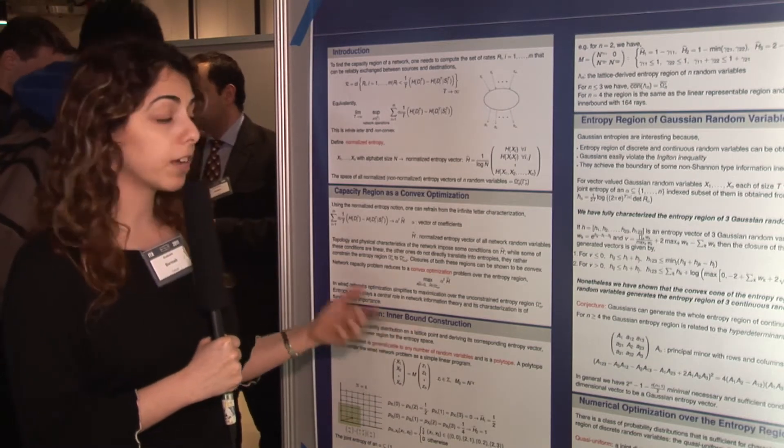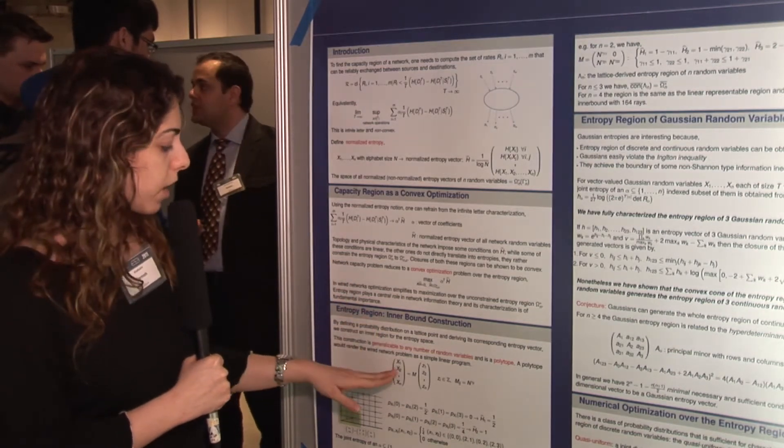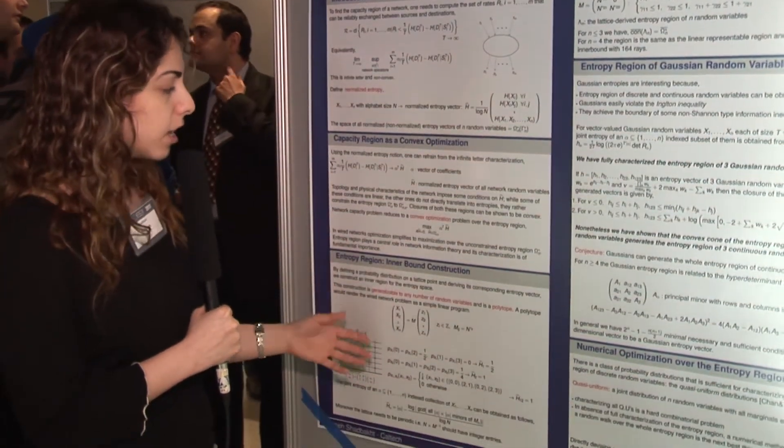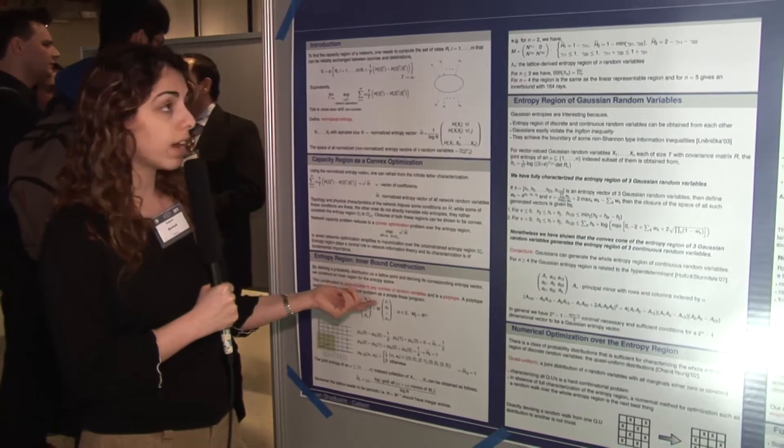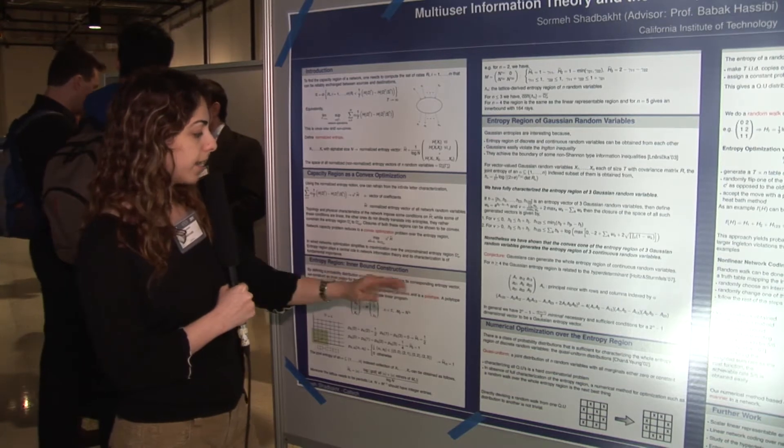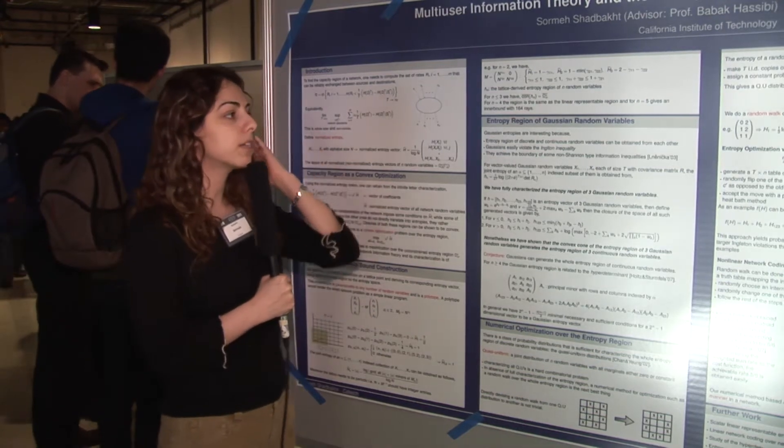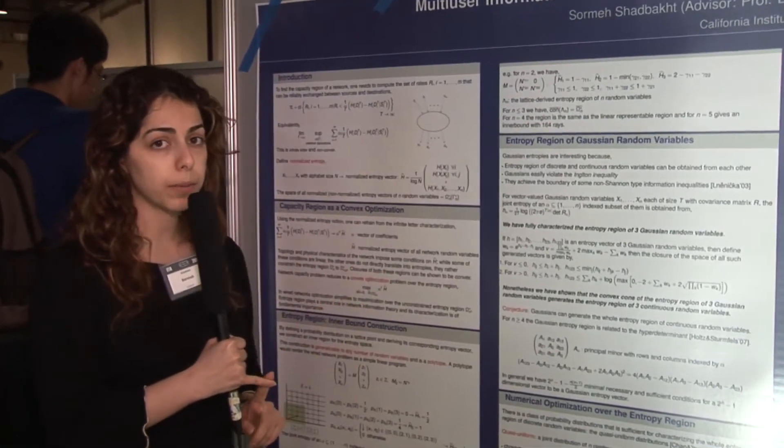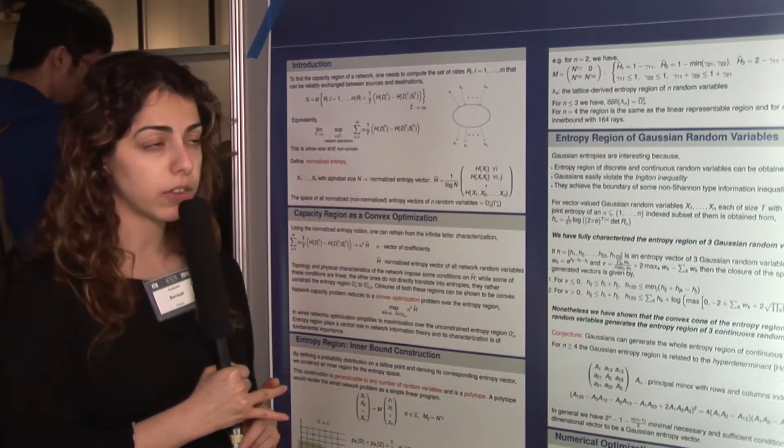First, we construct an inner bound for the entropy region through studying the region of discrete random variables. We define a probability distribution on lattice points in a Euclidean space and construct an inner bound. Our inner bound is generalizable to any number of random variables. It's a polytope, which is nice because it further simplifies the convex optimization problem into a linear program. We have explicitly computed this region for up to five random variables, and we have shown that for three random variables this region is tight, and for four random variables it matches the linear representable region of entropy vectors.